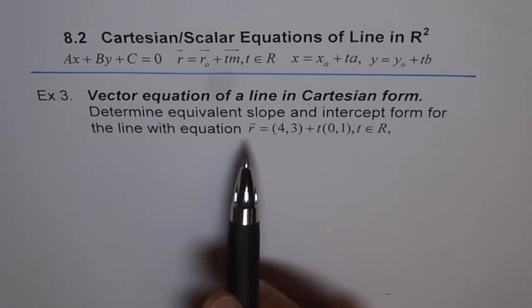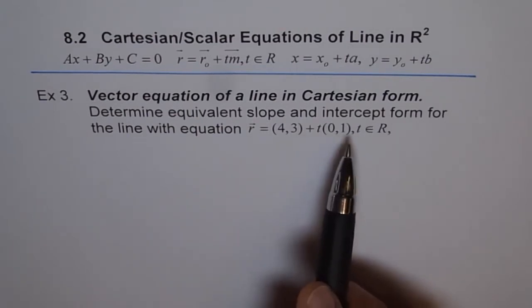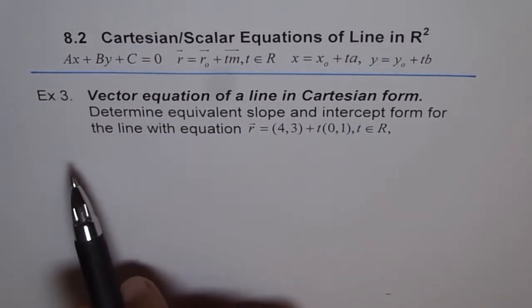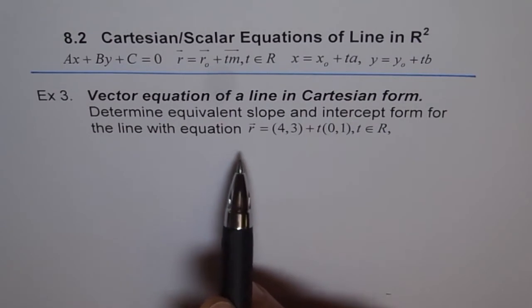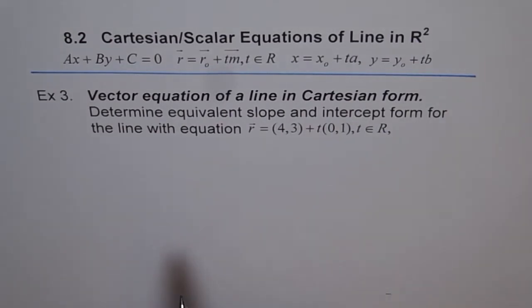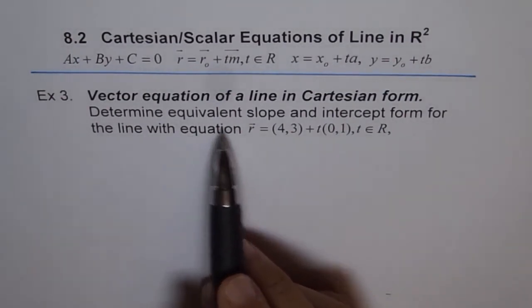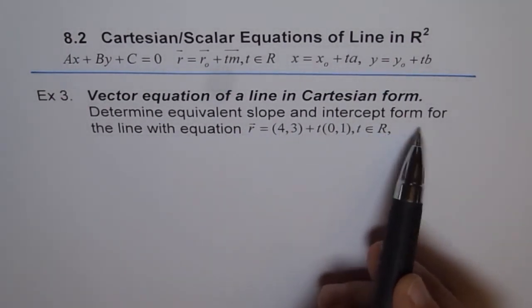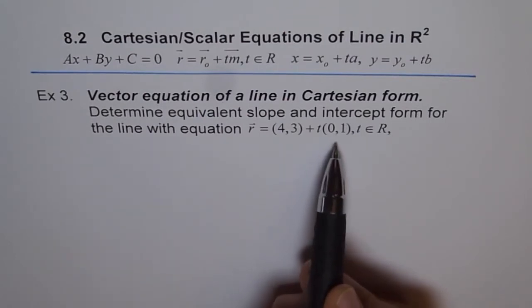Determine equivalent slope and intercept form for the line with the equation r = (4,3) + t(0,1), t ∈ R. So we need to find equivalent slope and intercept form for the line with this vector equation.